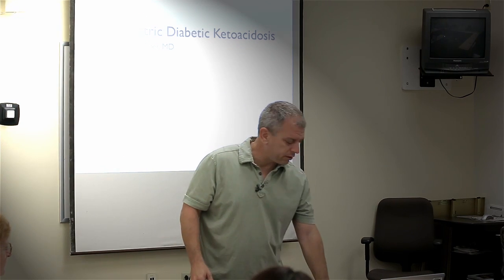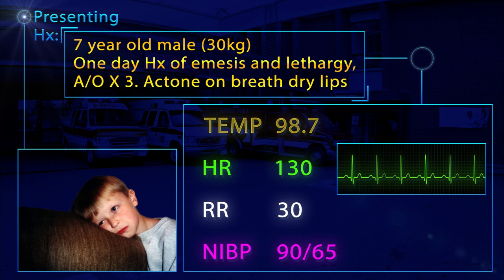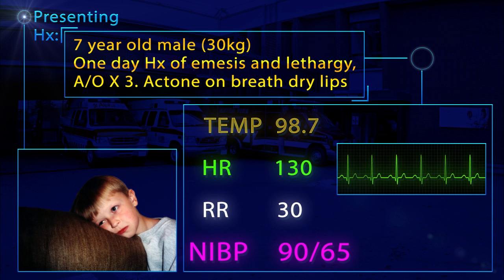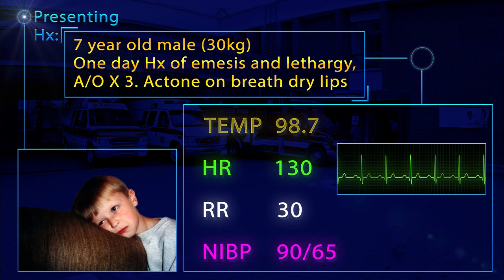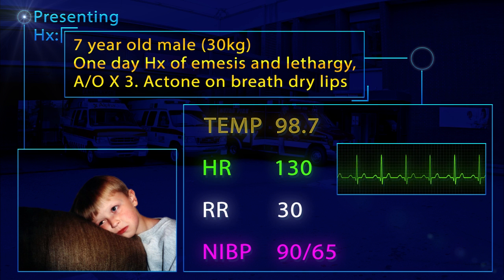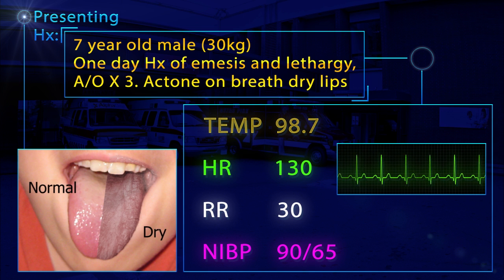I'd like to start off with this case scenario. I have a seven-year-old male that presents to the emergency department with a one-day history of vomiting and not feeling well. Current vitals show normal temperature, a little bit tachycardic, a little bit tachypneic, and a little bit hypotensive with a blood pressure of 90 over 65. He is a little lethargic but able to answer questions and knows where he is. On further examination, he has a fruity odor to his breath and dry mucous membranes, but otherwise his examination is relatively normal.